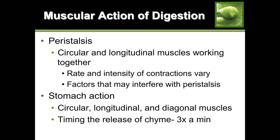The muscular action of digestion is called peristalsis. You have circular and longitudinal muscles working together to create a nice movement of food throughout your GI tract. The rate and intensity of contractions vary - think of when food sits well and your body moves it in smooth contractions, versus food poisoning where you get very sharp cramps because the body needs to expel whatever is making you sick. Medications can also interfere with peristalsis; constipation is sometimes a side effect.